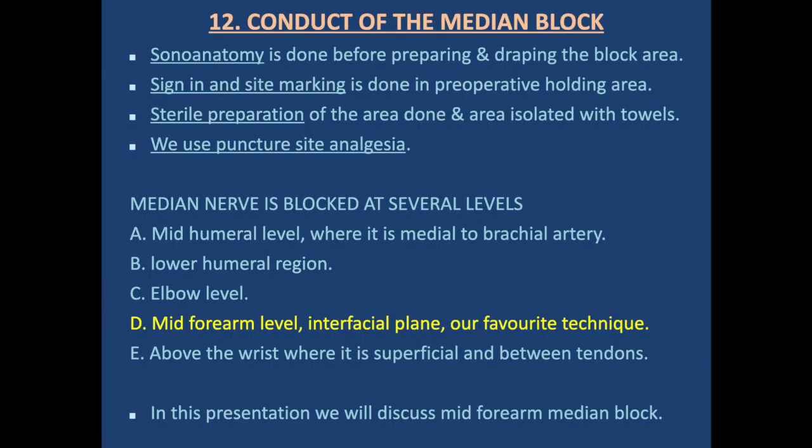Conduct of the block: sonoanatomy is done before preparing and draping the block area. Sign-in and site markings are done in the perioperative holding area. Sterile preparation of the area is done, isolated with towels, and we use puncture site analgesia. The median nerve can be blocked at several levels: at mid-humeral level where it is medial to the brachial artery, at lower humerus level, at elbow level, at mid forearm level in the interfascial plane — which is our favorite technique — and above the wrist where it is superficial and between tendons. In this presentation we discuss the mid forearm median nerve block.